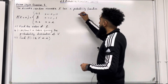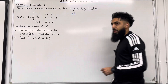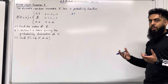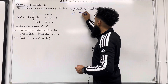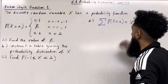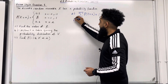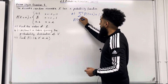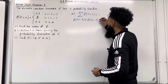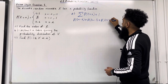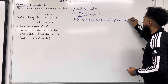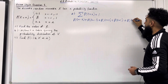We're going to work out the value of beta in part A. We need to use the fact that the sum of probabilities is equal to 1. So we have that the sum of P(X = x) is equal to 1. So we've got P(X = -2) + P(X = -1) + P(X = 0) + P(X = 1) + P(X = 2).